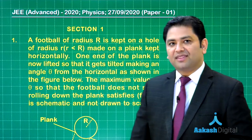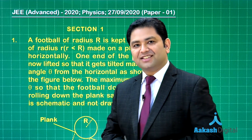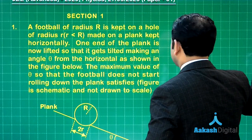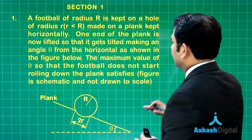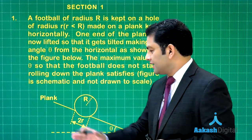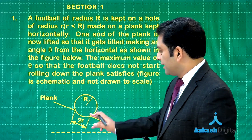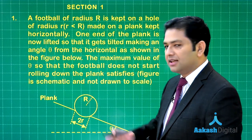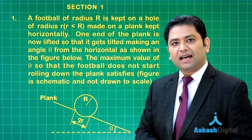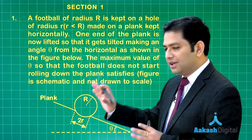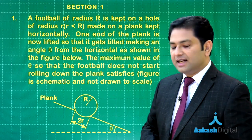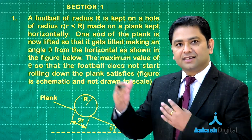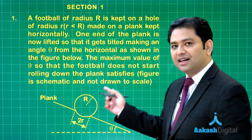The first question is from the ever-favorite topic of JEE Advanced, rotational motion, and this is quite a beautiful one. Let me show you the figure and statement. There is an inclined plane with a hole of radius small r, and on that hole is a spherical football of radius capital R. Now, right now the football is at rest. If we start increasing the inclination of the inclined plane, at a certain angle the football starts rolling down.